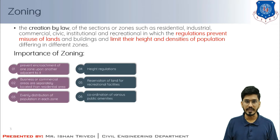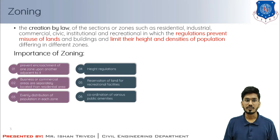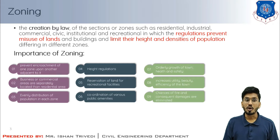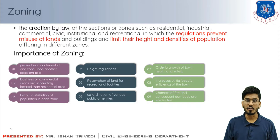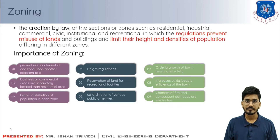Zoning helps with the proper coordination of various public amenities like water supply, drainage, electricity, and transport — essential amenities which everyone should be facilitated with. Zoning secures the orderly growth of the town, which promotes health, safety, and order. It increases the utility, beauty, and efficiency of the town, and zoning is the life and soul of a successful town plan. Lastly, chances of fire and consequent damages are also eliminated.